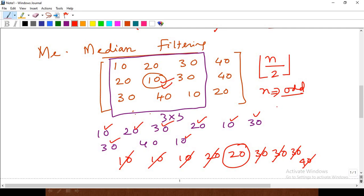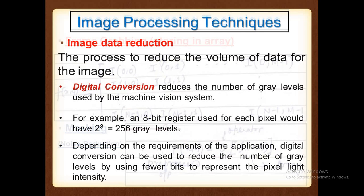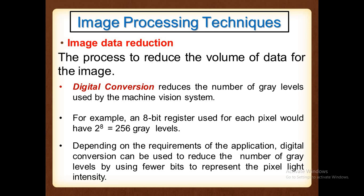After masking, the next step is image data reduction. The best approach is to convert the RGB color image to a black-and-white binary image. In a binary image, we use only ones or zeros, which drastically reduces the total number of bits and hence the image size. A MATLAB program will demonstrate how the size reduces. For an image of size 128×128 using an 8-bit A-to-D converter, the total number of bits to represent the gray level is 128 × 128 × 256, which is a very large number — approximately 4,194,304 bits.